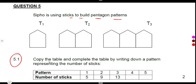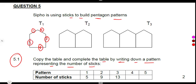Sub-question 5.1 asks us to copy and complete the table by writing down the pattern representing the number of sticks. Looking at pattern one, we count the sticks: one, two, three, four, five. There are five sticks in pattern one, exactly as given.